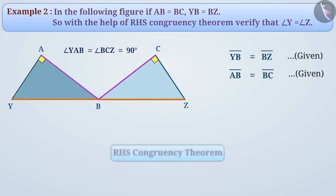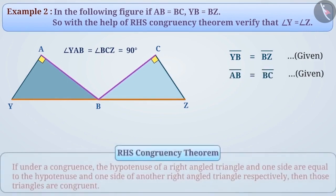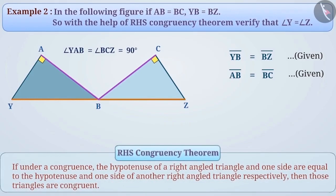We know that the concept of the RHS congruency theorem is that if under a congruence, the hypotenuse of a right angled triangle and one side are equal to the hypotenuse and one side of another right angled triangle respectively, then those triangles are congruent.